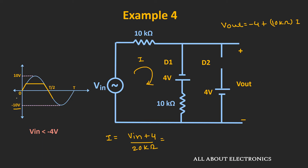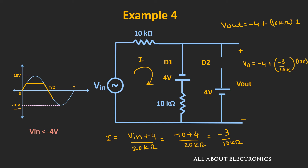The output voltage will be minimum whenever the input voltage Vin is equal to minus 10V. So let us find the current I whenever Vin is equal to minus 10V. At that time, the current I can be given as minus 10 plus 4V divided by 20kΩ, that is equal to minus 3 divided by 10kΩ. So this will be the current flowing through the given circuit. If we put the value of I in this expression, then the output voltage Vout will be equal to minus 4 plus (minus 3 / 10kΩ) × 10kΩ — that is equal to minus 4 plus minus 3.